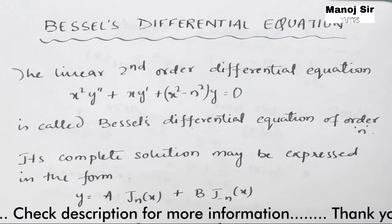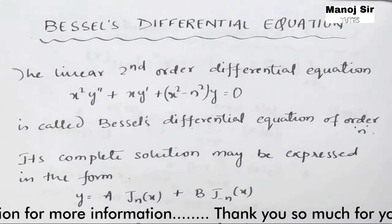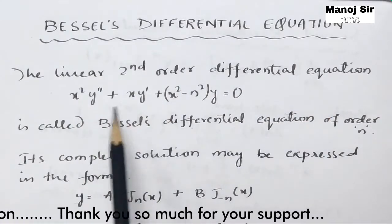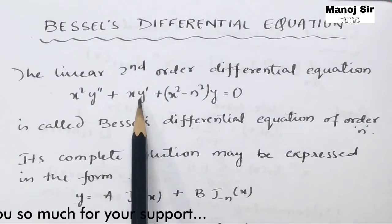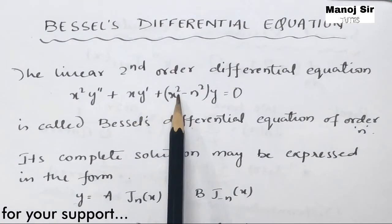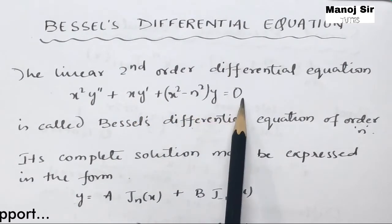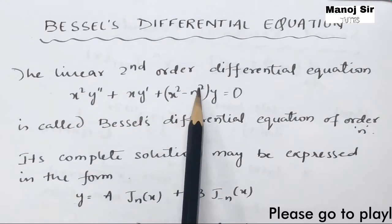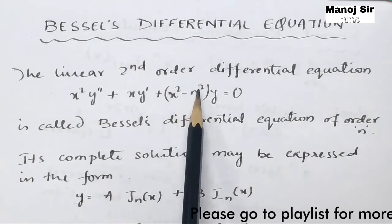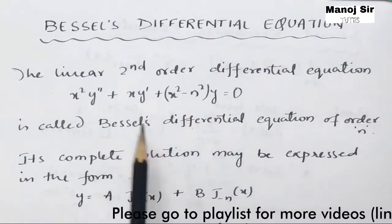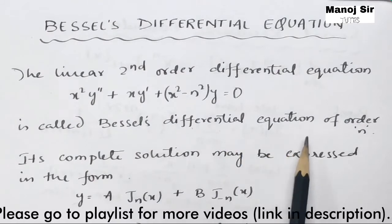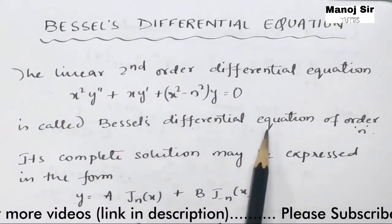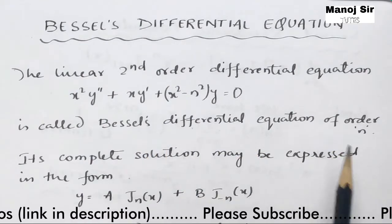Let us start with Bessel's differential equation. The linear second-order differential equation which can be written as x² y'' + x y' + (x² − n²) y = 0 is called Bessel's differential equation of order n.